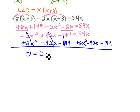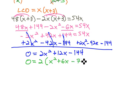And when we do, we get zero equals two x squared. Fifty-four minus forty-two is positive twelve x, minus 144. Let's see if we can solve this by factoring. Factoring out a two gives us x squared plus six x minus seventy-two.